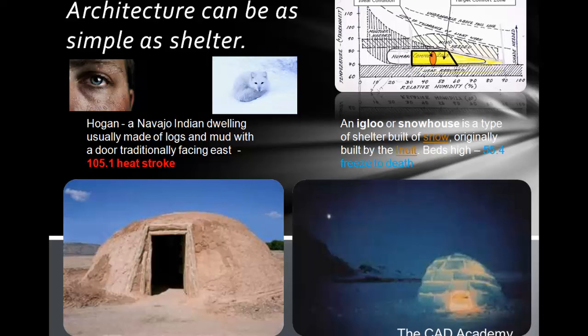I've taken two buildings from the opposite ends of the temperature spectrum. One is a Hogan — it's a Navajo Indian dwelling. They live in an area where it can get to be in the heat of the summer 115 to 120 degrees, yet they can live in a Hogan without dying of heat stroke. The other end of the spectrum is in Alaska. This is an igloo, originally built by the Inuits. They put in a small fire, raise their beds higher, and they can keep from freezing to death. What I think is unique is if you look at the shape of these two architectural dwellings, they are similar.